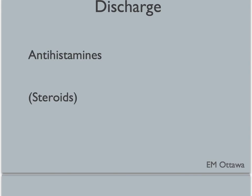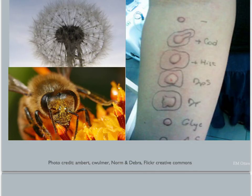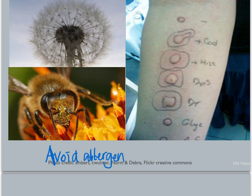Once the patient feels better, they are observed to ensure symptoms are indeed subsiding. When they go home, they are often prescribed a few more days of antihistamines and steroids if they were used. Patients should also be given an EpiPen and learn how to use it in case they have another reaction in the future and cannot reach the hospital in time. The patient should stay away from the allergen if they know what it is. If unknown, we should refer them for outpatient allergy testing.